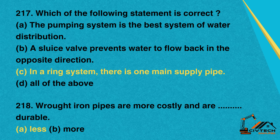Question 217: Which of the following statement is correct? A. The pumping system is the best system of water distribution. B. A sluice valve prevents water to flow back in the opposite direction. C. In a ring system, there is one main supply pipe. D. All of the above. Correct option: C. In a ring system, there is one main supply pipe.